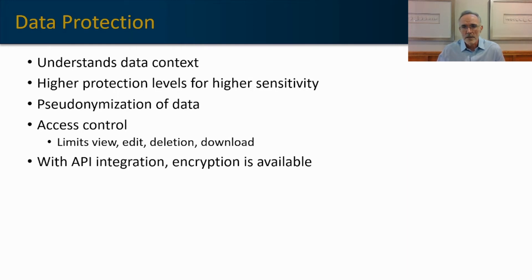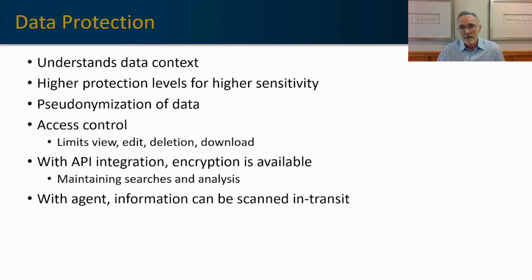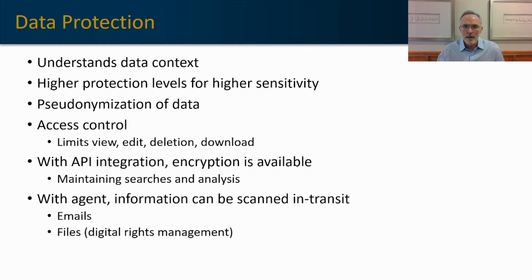With API integration, you can actually encrypt data. Most CASBs will still allow you to run analytics and do searches on that data even when it's encrypted, so you're not losing access and functionality. With an agent, information can be scanned in transit — if someone is sending an email, that email, even though it's not going into a particular cloud environment, can be interrogated and key information identified, such as key product information or PII. Many CASBs also have a form of digital rights management, which might force the recipient of that data to take extra steps before they can open it, like establishing authentication.